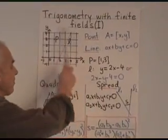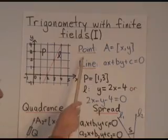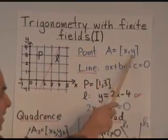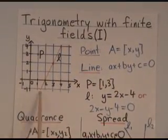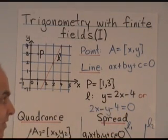Let me remind you that in the plane, in the Cartesian framework, we can represent a point by an ordered pair xy, and a line by an equation of the form ax plus by plus c equals zero.